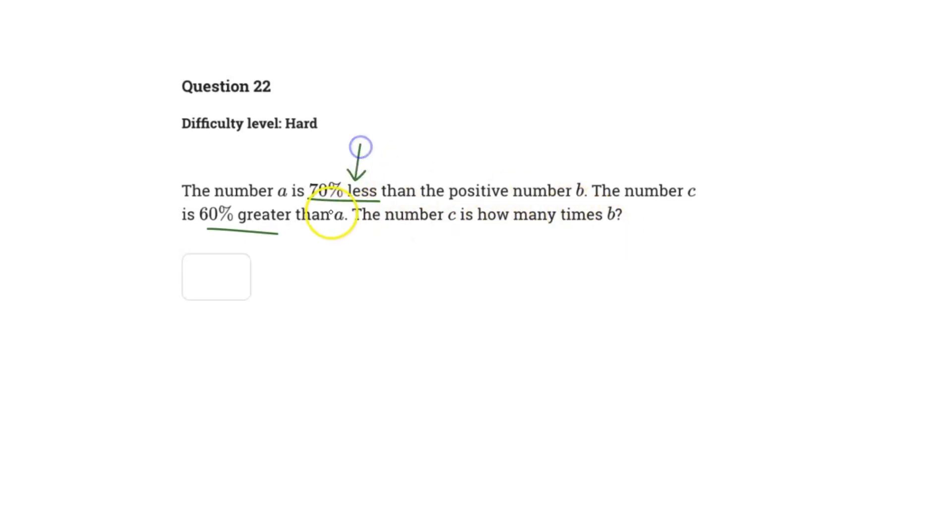So we've got two percent changes here: 70% less than, which you can treat the same as a 70% decrease, and 60% greater than, which you can treat as a 60% increase. Whenever we have these percentage values, we can use the percent multiplier: 1 plus R, or percent over 100.